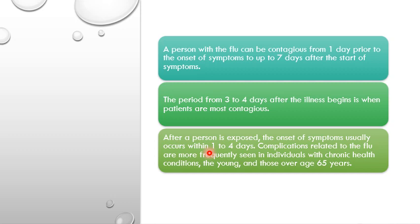From three to four days after the illness begins, the patients are most contagious. After a person is exposed, symptoms usually occur within one to four days. Complications related to flu are seen particularly in individuals with chronic health conditions — patients who have diabetes, chronic liver disease, hypertension, or respiratory complications are at greater risk of complications after getting influenza. Also, those over 65 years old are at risk of complications after influenza infection.